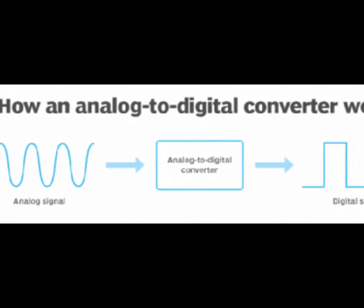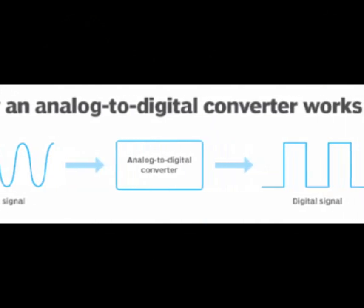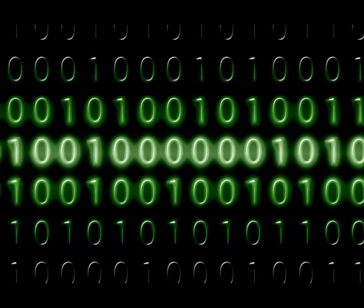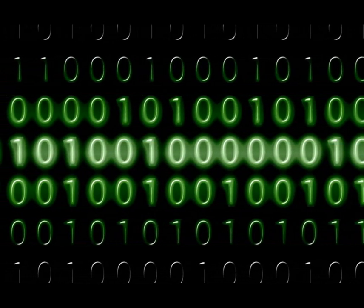In an 8-bit ADC, each sample will be represented by an 8-digit binary number. The binary code is the digital representation of the analog signal at that specific point in time.